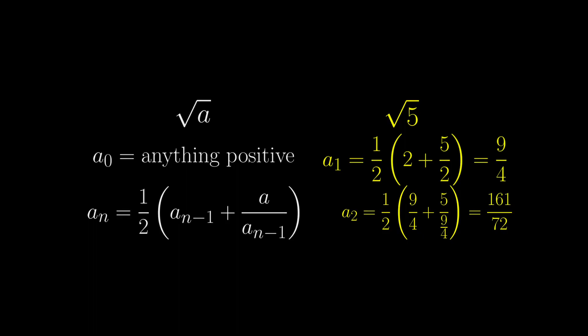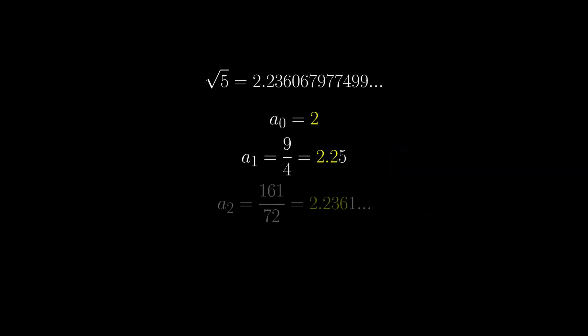If you start off with 2, then only after 3 iterations, you will have 10 correct digits of square root of 5, so this is a very efficient method.